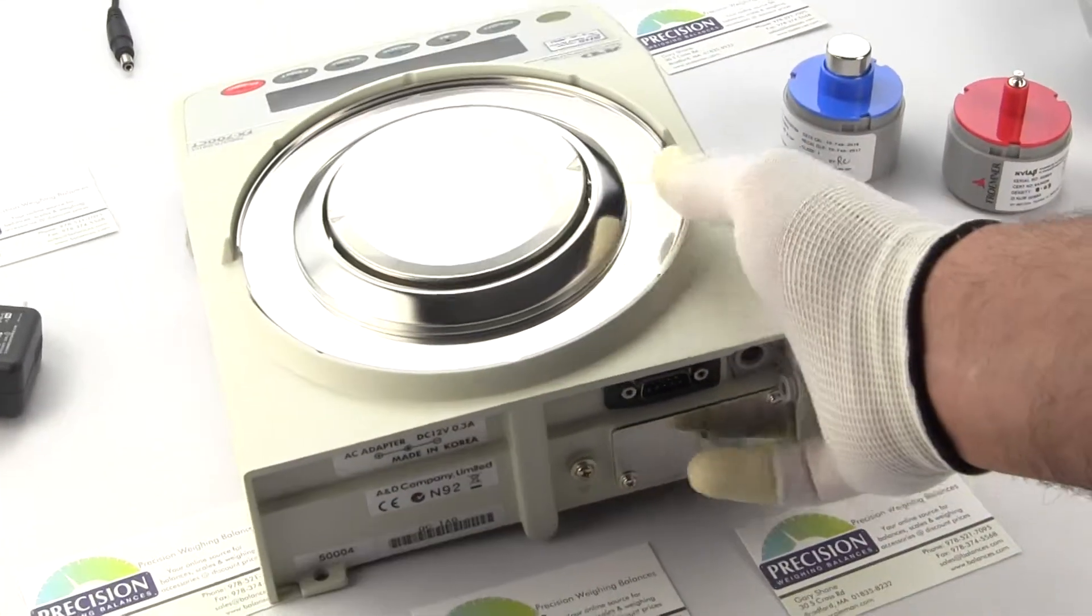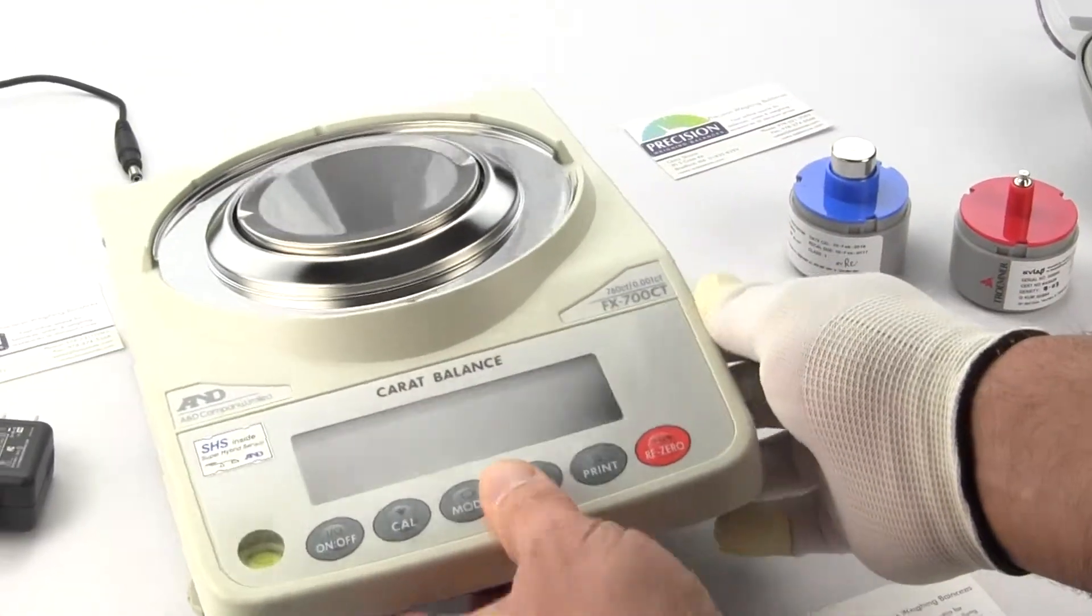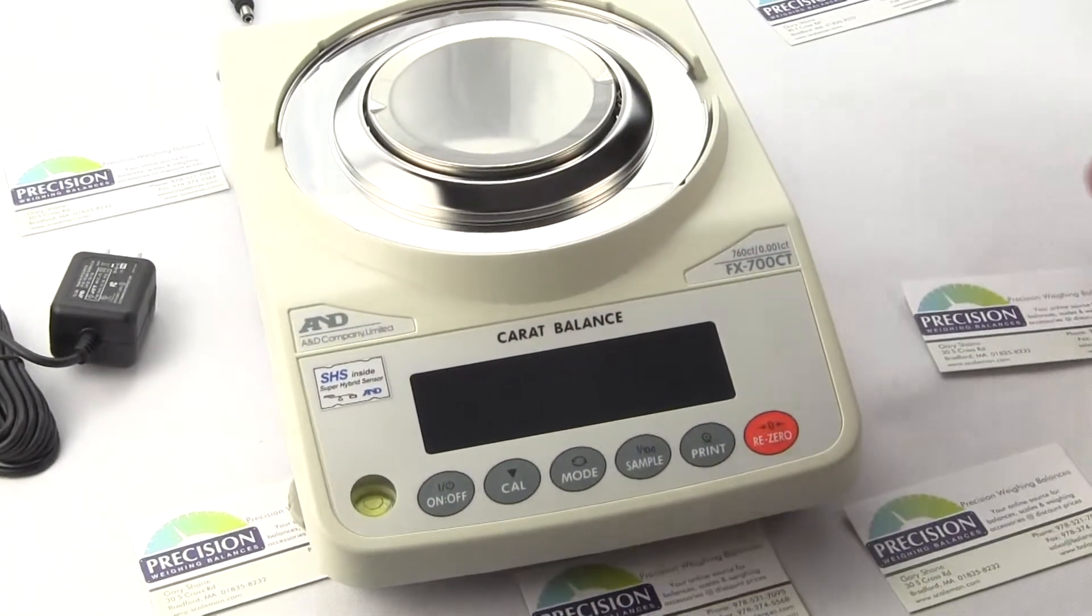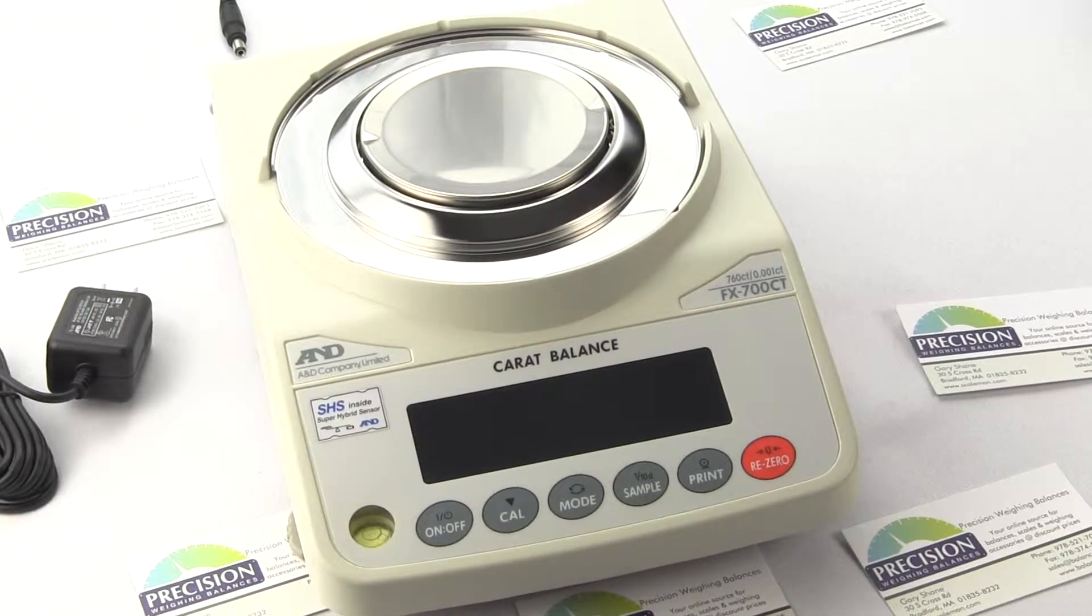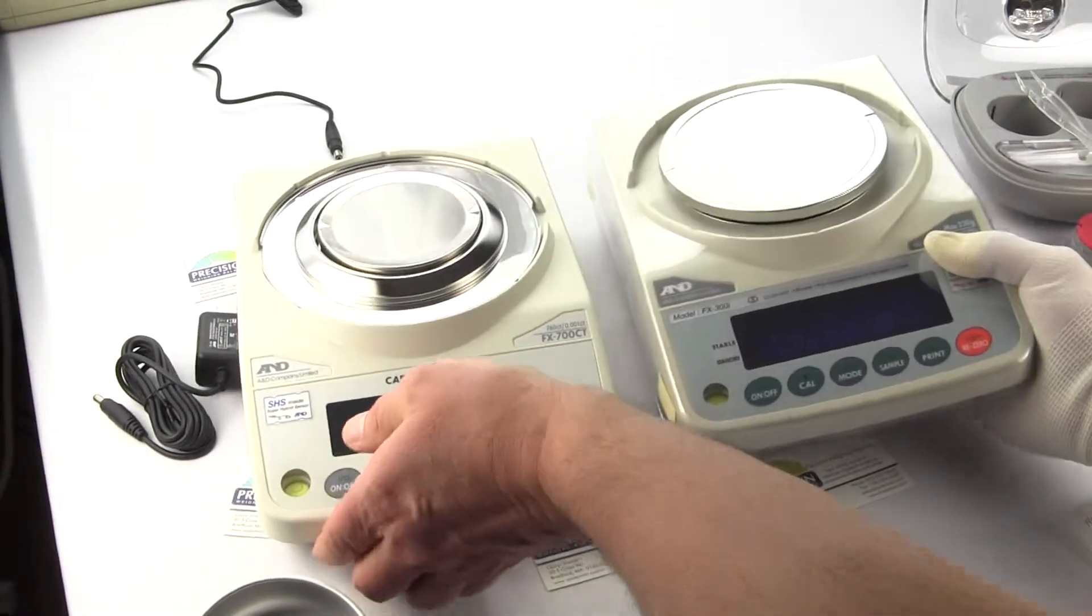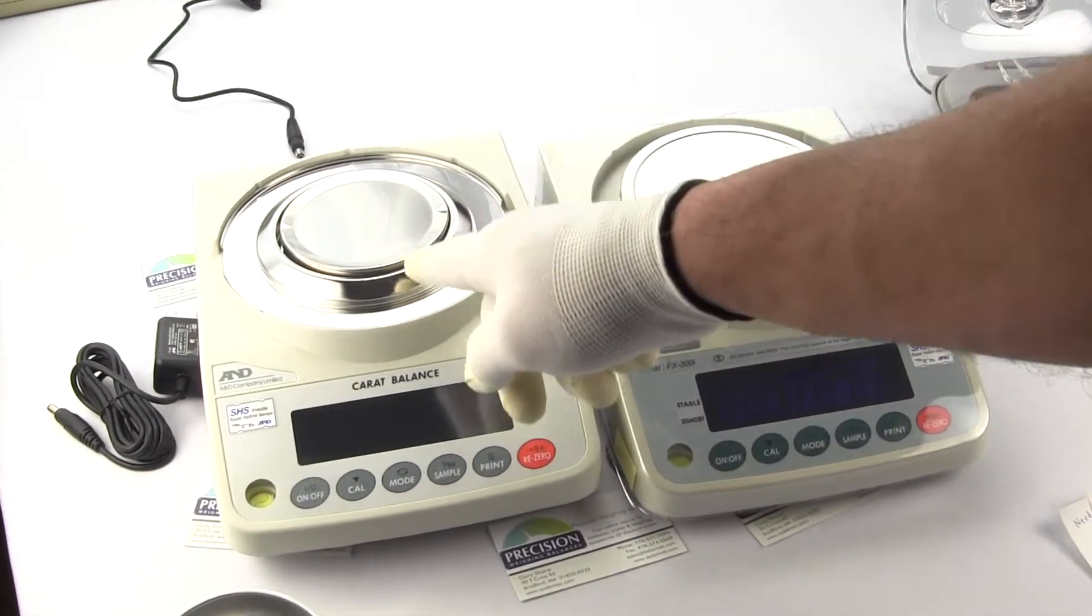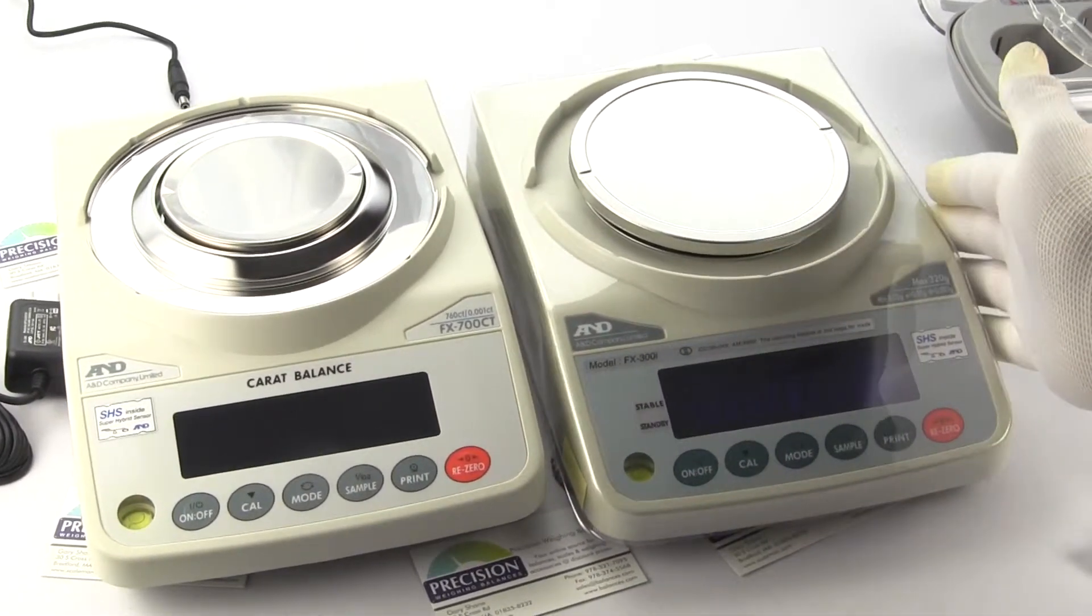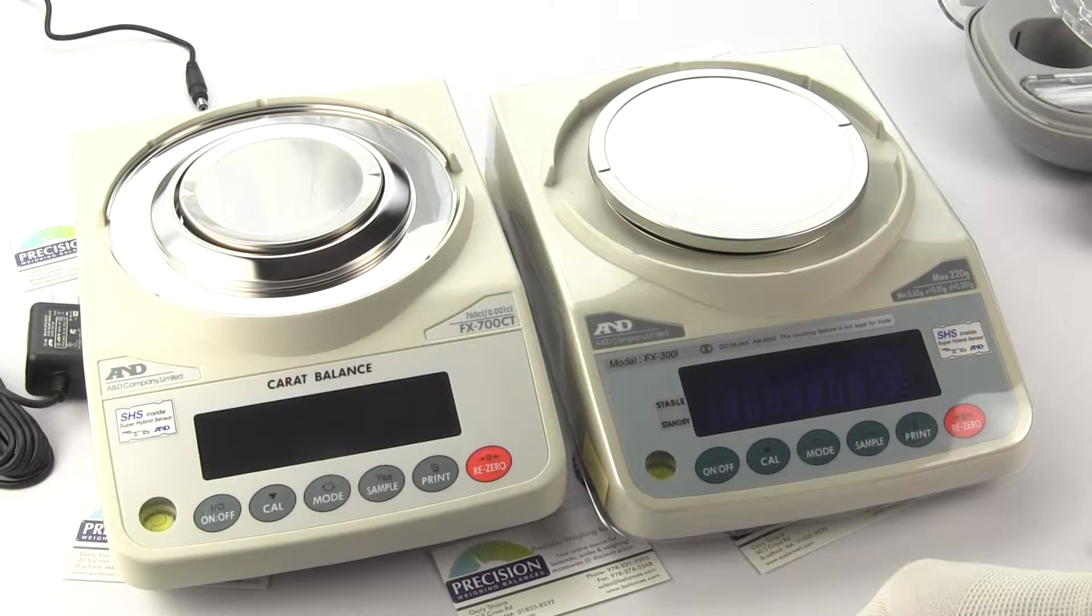So that really covers everything on the FX700CT. This balance it is using the exact same housing as an FXI milligram balance. So I have a unit here this is the FX300i. You will notice we have a smaller platform here so the carat scale is giving you a smaller platform. It's using the same housing but this balance is really more like A&D's HRA series.